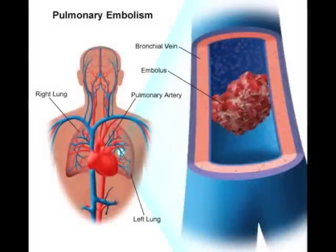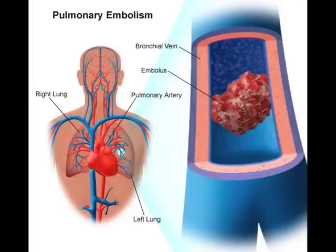A pulmonary embolism is a sudden blockage of an artery in the lungs. It is caused by a blood clot that travels from other parts of the body, such as the leg, into the lungs. If not removed or dissolved, a pulmonary embolism can cause lung damage or death.